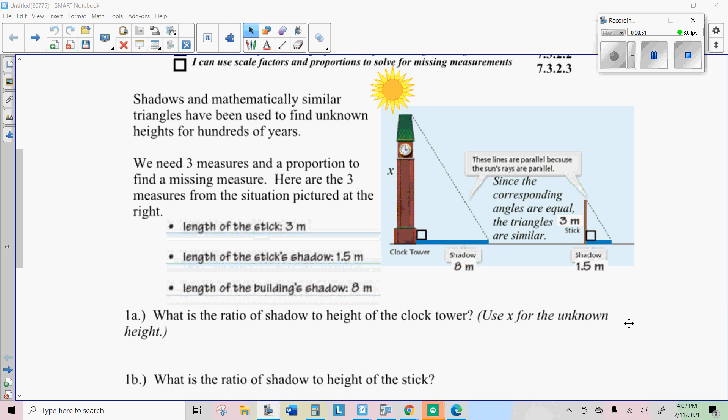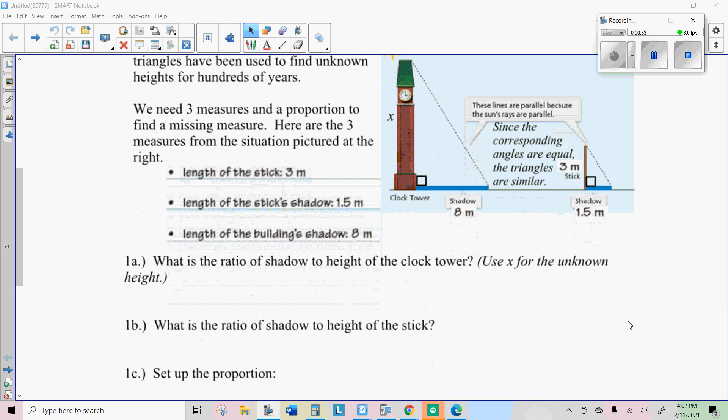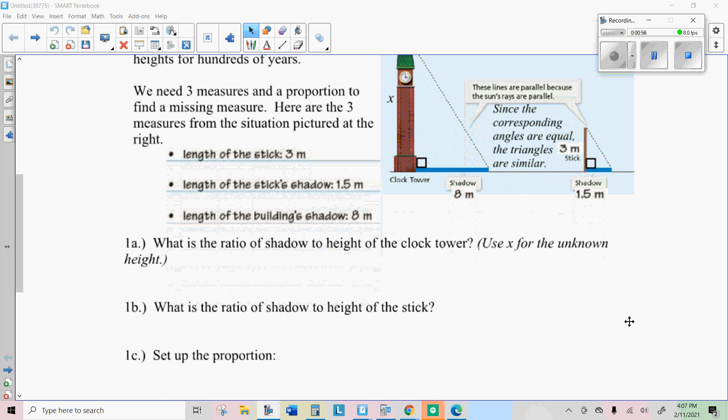The length of the building's shadow is eight meters. So the ratio of the shadow to height of the clock tower would be eight over X. So X represents the height of the clock tower right here. So I'm just using these two numbers to get that ratio. And the ratio of the shadow height to the stick is one point five over three.